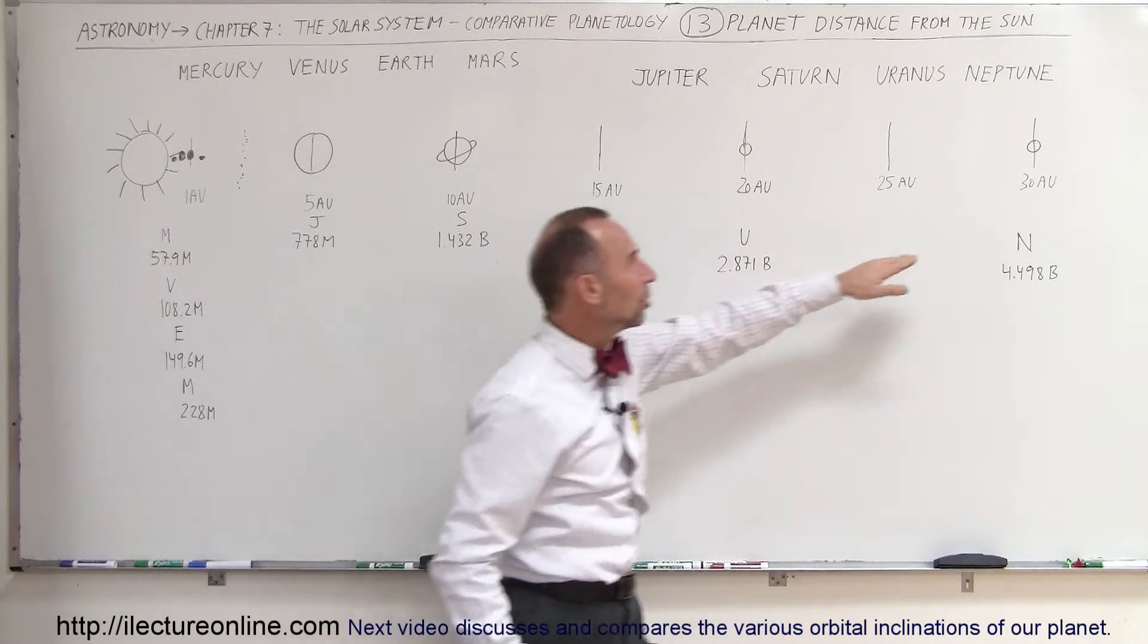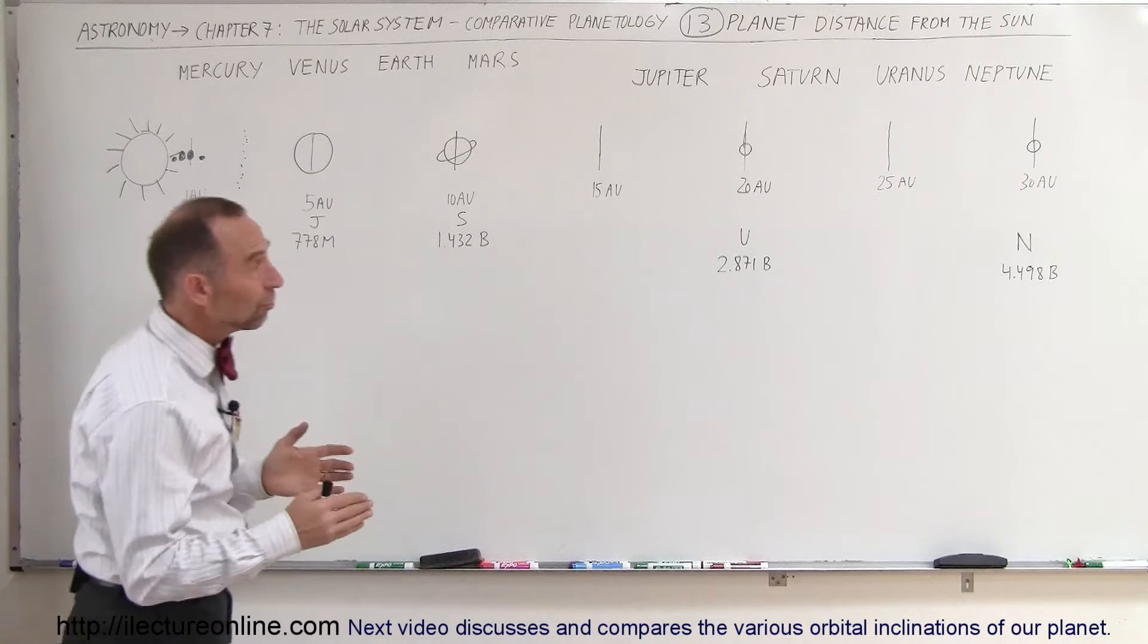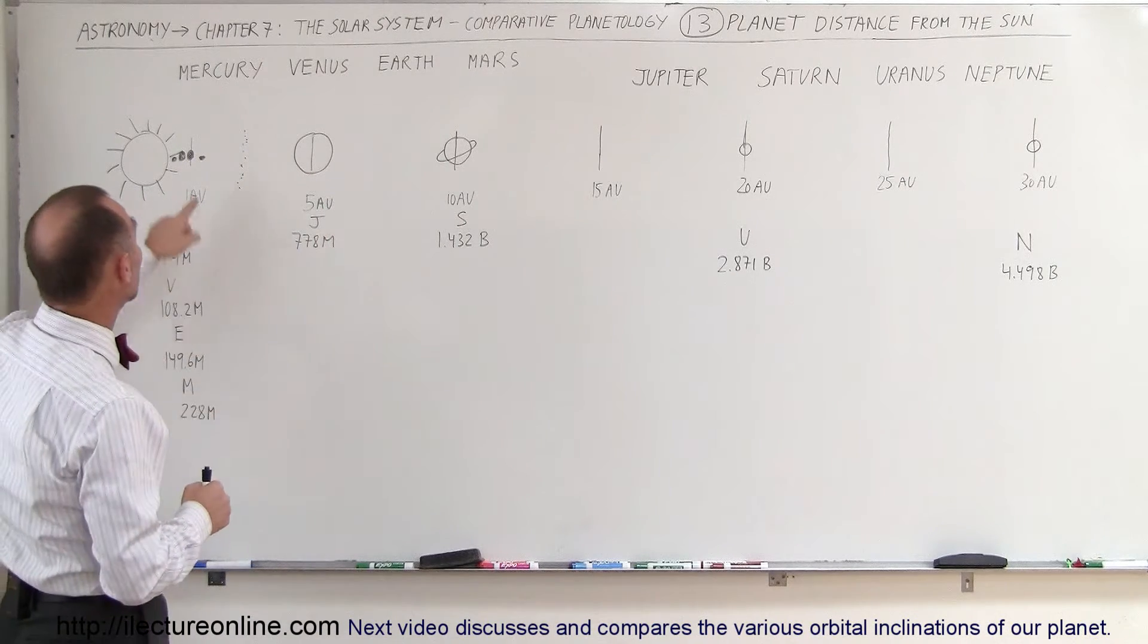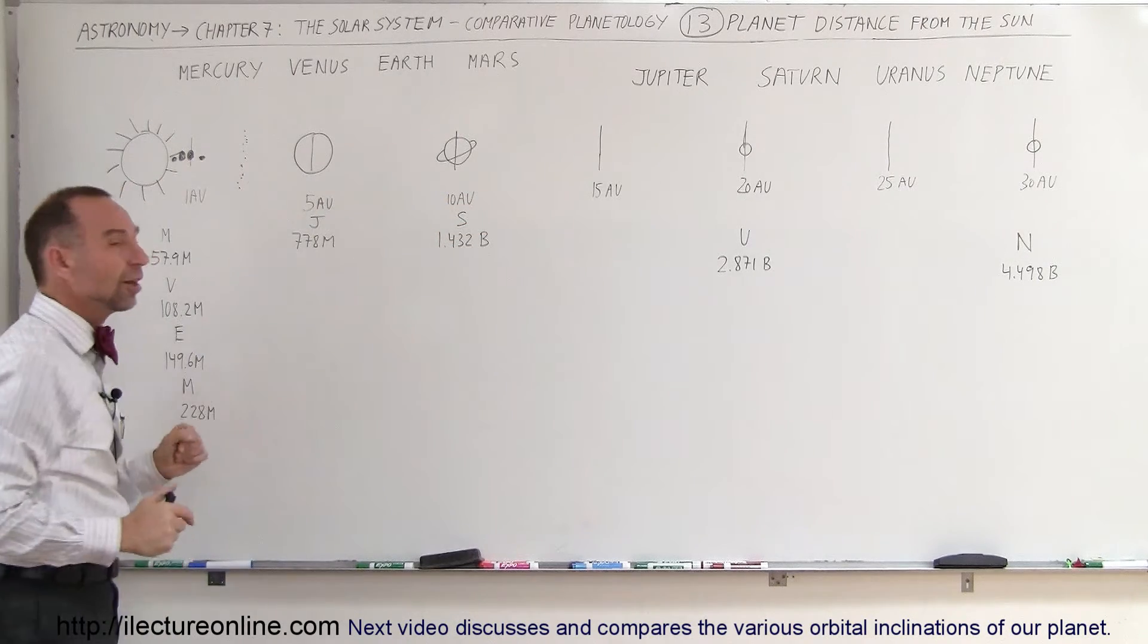Then we have Uranus at 20 astronomical units, and Neptune at 30 astronomical units, which means that the distance between Neptune and the Sun is 30 times the distance between the Earth and the Sun. So you can see how far away those planets are relative to the Sun.